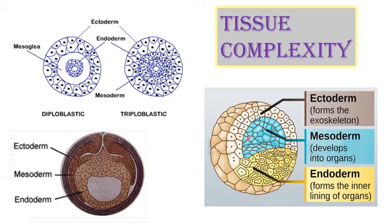The ectoderm is the outermost germinal layer and forms the exoskeleton. The mesoderm gives rise to the organs of the animal. The endoderm forms the inner lining of the organs of the developing animal.